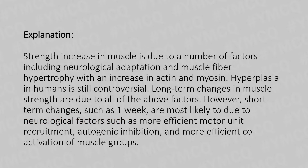The strength increase in muscle is due to a number of factors, including neurological adaptation and muscle fiber hypertrophy, along with an increase in actin and myosin. Hyperplasia in humans is still controversial. Long-term changes in muscle strength are due to all of the above factors; however, short-term changes such as one week are most likely due to neurological factors such as more efficient motor unit recruitment, autogenic inhibition, and more efficient co-contraction of the muscle groups.